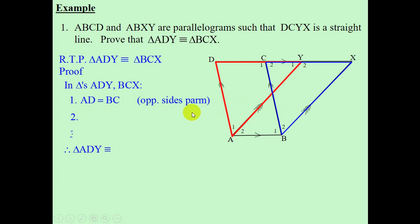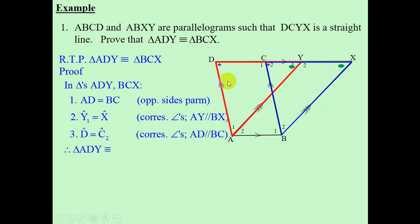Next, let's look for angles that are equal in the red triangle and the blue triangle. Y1 and angle X are equal — the reason is corresponding angles, with lines BX and AY parallel. Then angle D and angle C2 are also equal because of corresponding angles, with AD parallel to BC. Do we have a case? Yes — angle, angle, and a side. So we can conclude that triangle ADY is congruent to triangle BCX, and the reason is side, angle, angle.